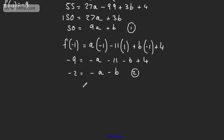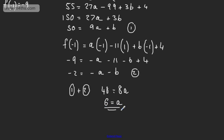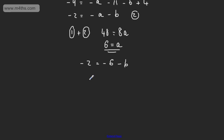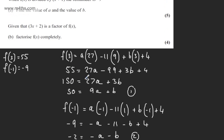I'm going to add equation 1 and equation 2 together. Doing 1 plus 2, we get 50 plus minus 2 which is 48. We have 9a minus a giving us 8a, and the b's cancel. So a is equal to 6. Substituting back into equation 2: minus 2 equals minus 6 minus b. Adding 6 to both sides, b is equal to minus 4. So 5 marks in total.